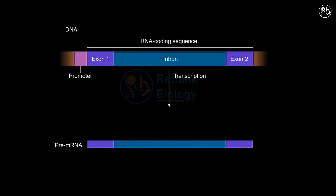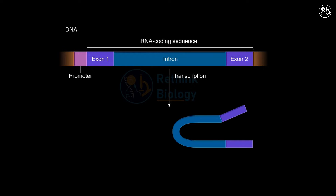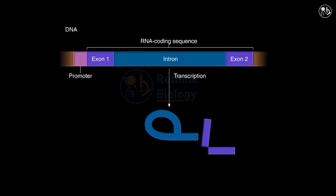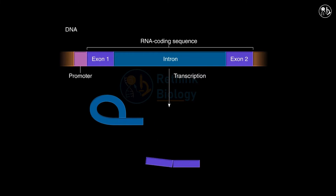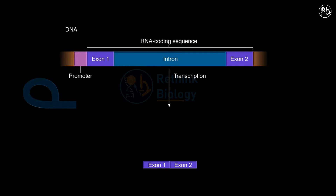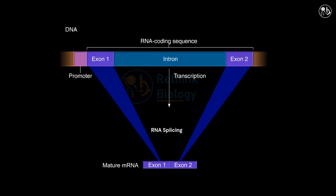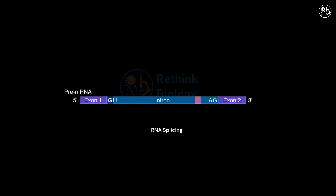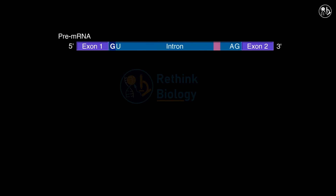To make a mature mRNA, the pre-mRNA has to remove the introns and join the exons together. This is called RNA splicing. RNA splicing relies on finding the border between exon and intron.